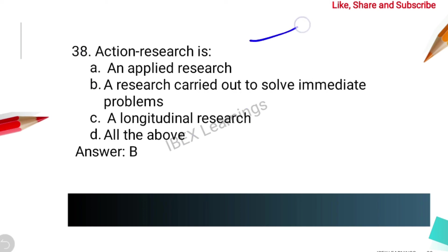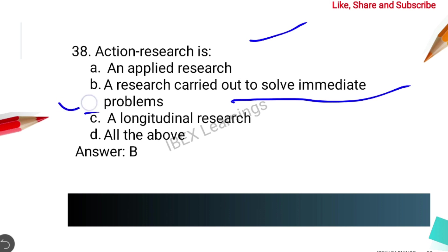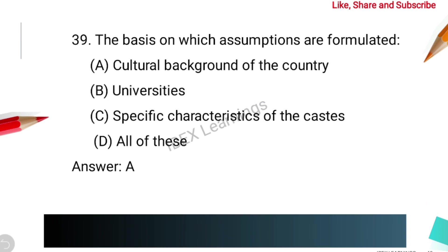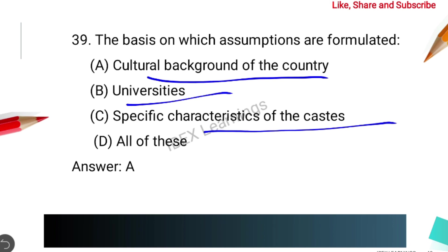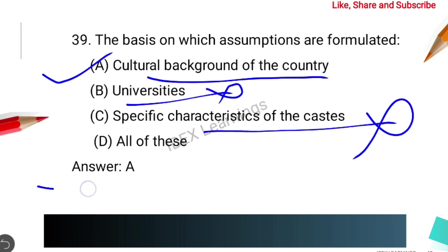The next question concerns action research. Then, the basis on which assumptions are formulated — options include the cultural background of history, universities, and specific characteristics of caste. Assumptions cannot be based on specific university or caste characteristics. The main basis of assumptions is the particular country's cultural background. The correct answer is option A.